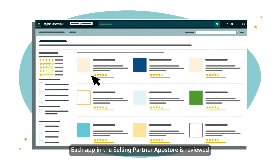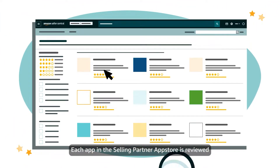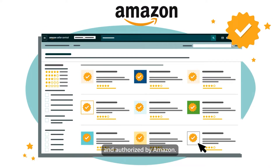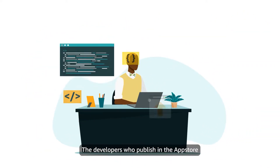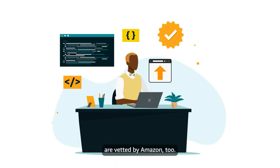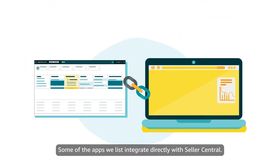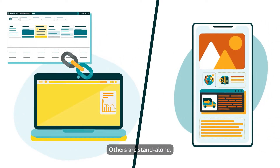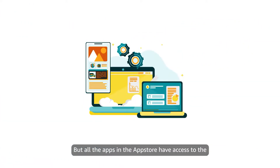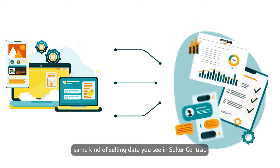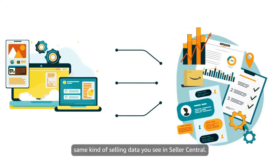Each app in the Selling Partner App Store is reviewed and authorized by Amazon. The developers who publish in the App Store are vetted by Amazon, too. Some of the apps we list integrate directly with Seller Central. Others are standalone. But all the apps in the App Store have access to the same kind of selling data you see in Seller Central.